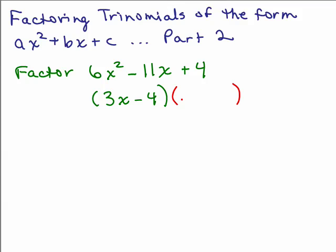Well, 3x times what will give you 6x squared? 2x. And negative 4 times what will give you 4? Negative 1. And then you can check this by doing the outer and inner terms and making sure that it really does add up to a negative 11x, which it does. Negative 3x and negative 8x. So, that's your correct answer.